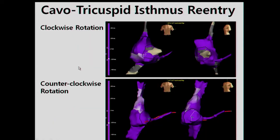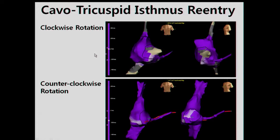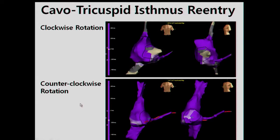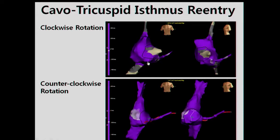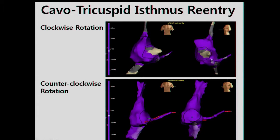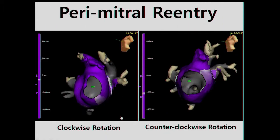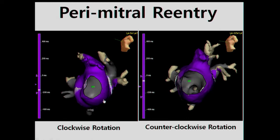Atrial flutter usually rotates around the vestibule. Right-side vestibule reentry is usually named typical atrial flutter, and left-side vestibule reentry is named atypical flutter. These are typical examples of typical cavotricuspid isthmus reentry atrial flutter. The upper panel shows counterclockwise rotation and the lower panel shows clockwise rotation of typical atrial flutter, with the wavefront rotating around the tricuspid valve. This is a typical example of atypical perimitral reentry — clockwise and counterclockwise — where the wavefront rotates around the mitral annulus.